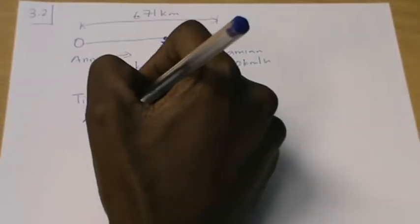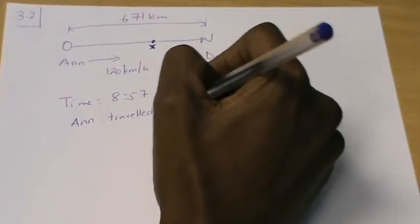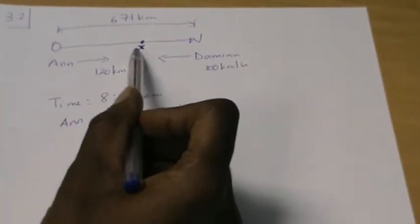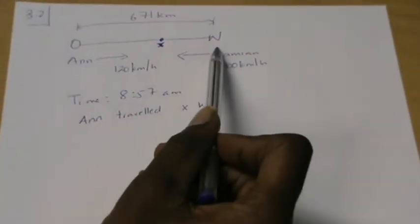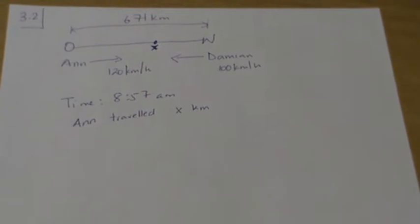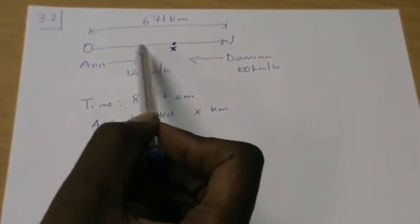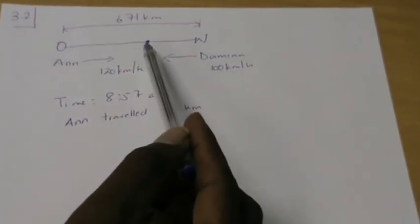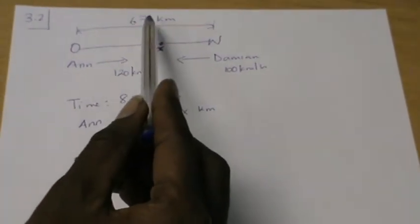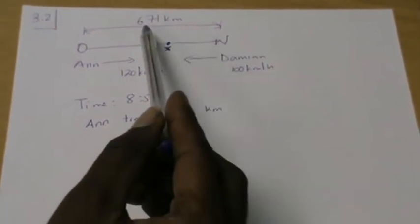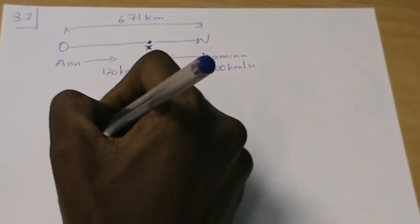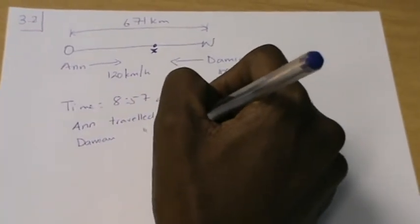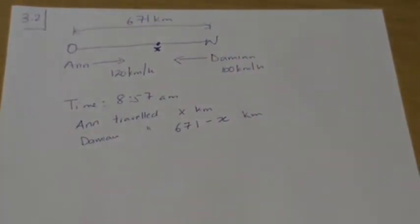They're meeting at point x. We can say Ann has traveled x kilometers — that is how far she has traveled up to the meeting point. For Damian, I don't want to use another letter, so I'll rewrite his distance in terms of x and the total distance. Since Ondangwa to Ventuk is 671 km and Ann traveled x km, Damian traveled 671 minus x kilometers.